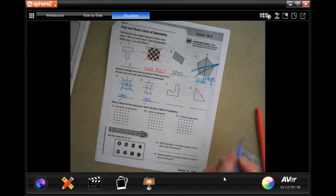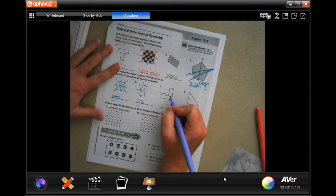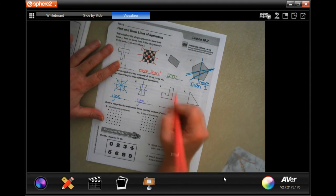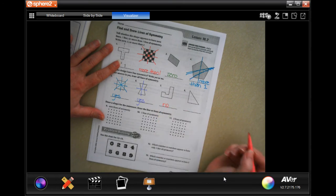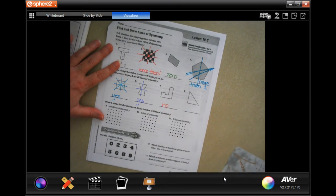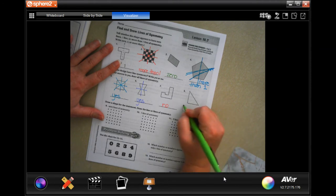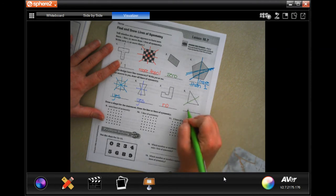This one, there's not a good way to split that where it's going to give us a line of symmetry. I can't cut it any way that's going to give us a line of symmetry, so no. And this one, if I cut it right there, that's a line of symmetry, so yes.